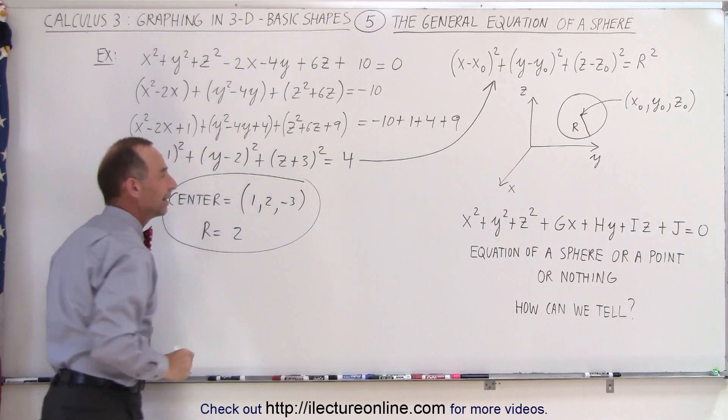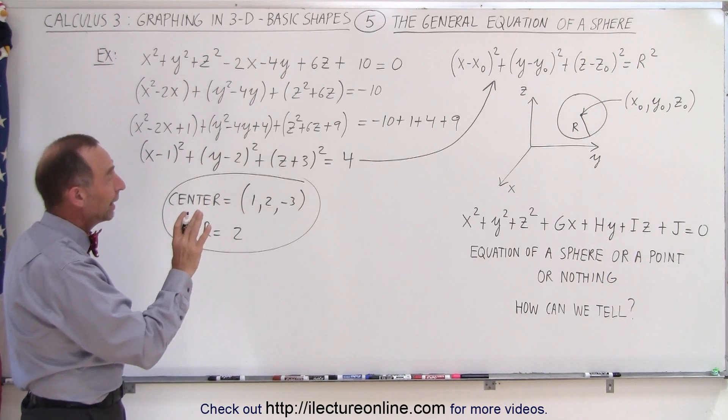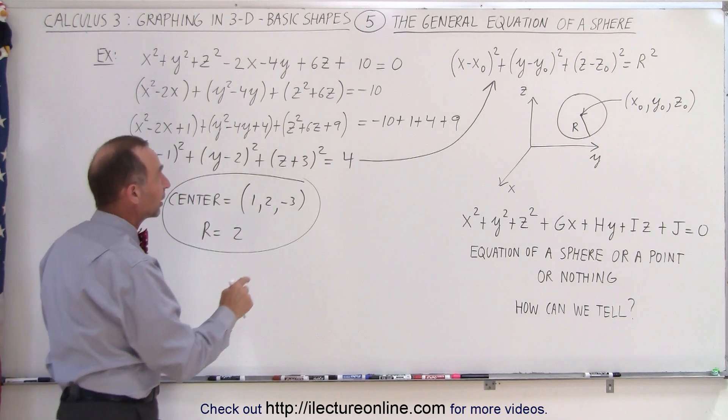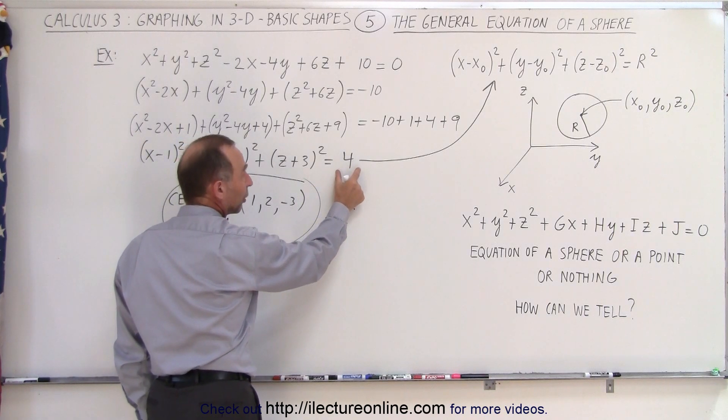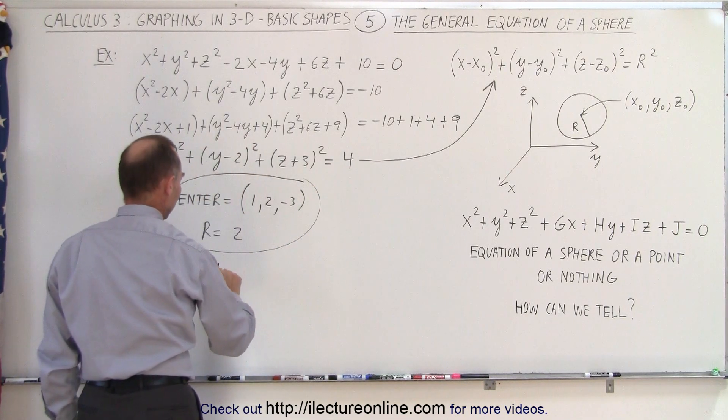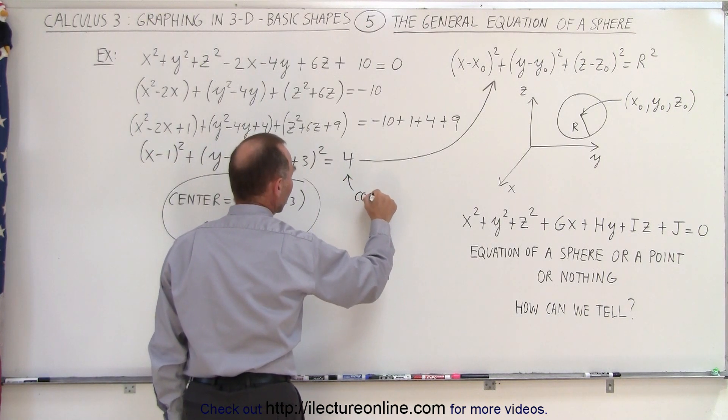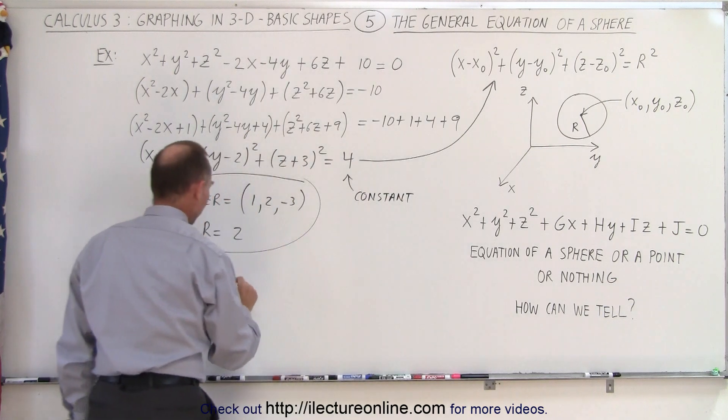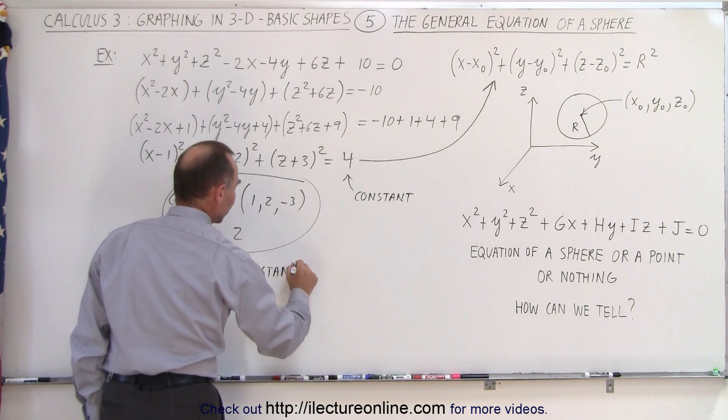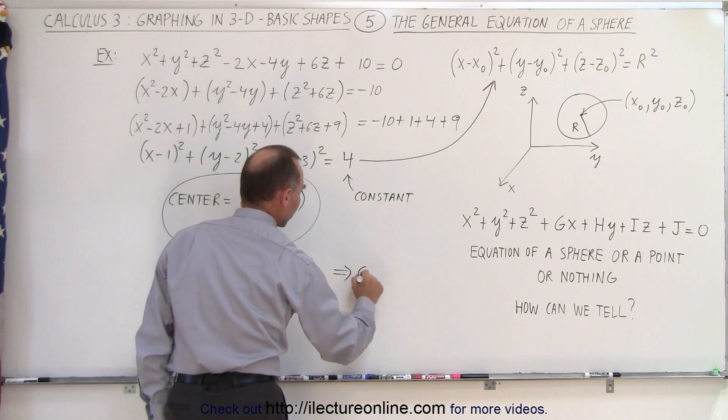So you can see that, yes indeed, that was the equation of a circle. Now, be careful, it's only equation of a circle because the constant on the right side was greater than zero. So if the constant, so let's call this the constant on the right side, if the constant is greater than zero, then we have an equation of a circle.